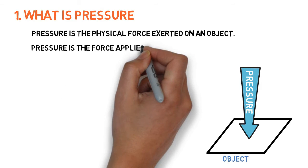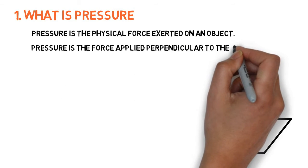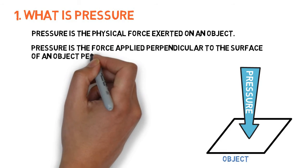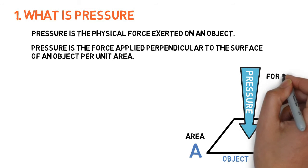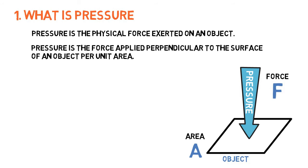Pressure is the force applied perpendicular to the surface of an object per unit area. Area is A, force is F, and pressure is P. Pressure is equal to force divided by area.